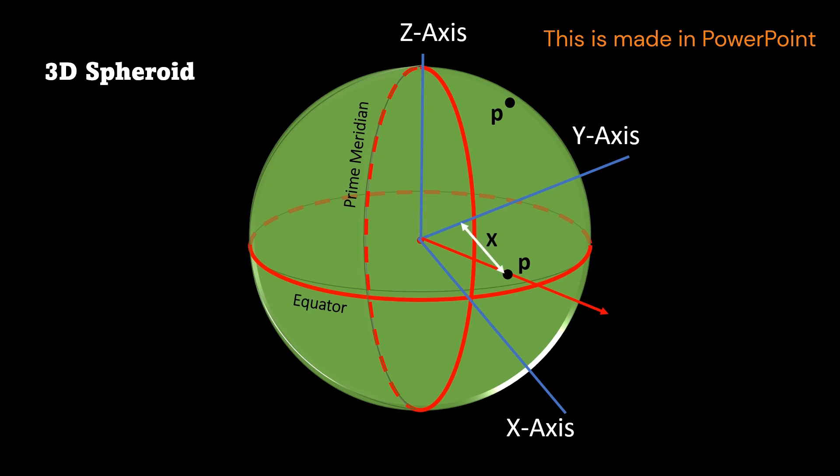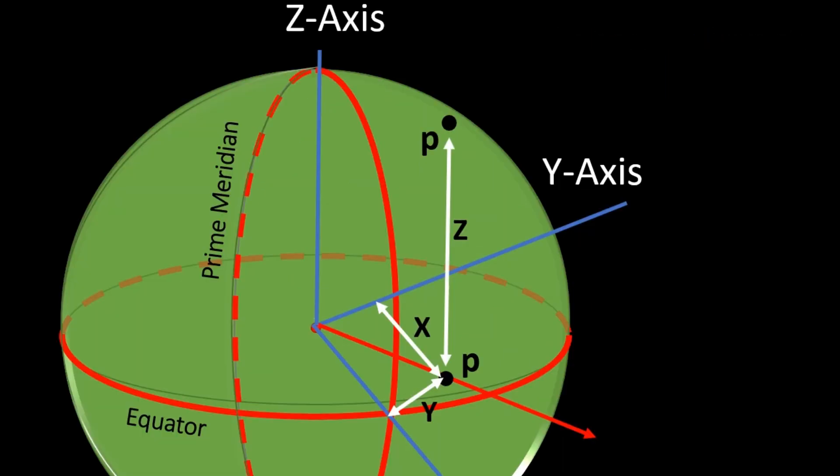So the point P has an x-value and y-value on the equatorial plane and also a z-value above the plane. And this my friend is a Cartesian coordinate system.